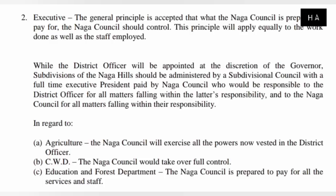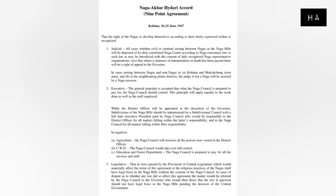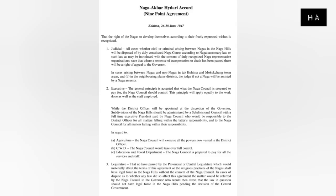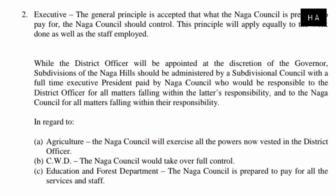Number 2 — Executive. The Naga Council staff employed would have executive rights. In the Naga hills, subdivisions were established, and the subdivision council would monitor and administer. Salaries would be paid by the Naga Council. The District Officer's powers would be exercised by the Naga Council. Regarding agriculture pay, the CWD would be fully taken up by the Naga Council.